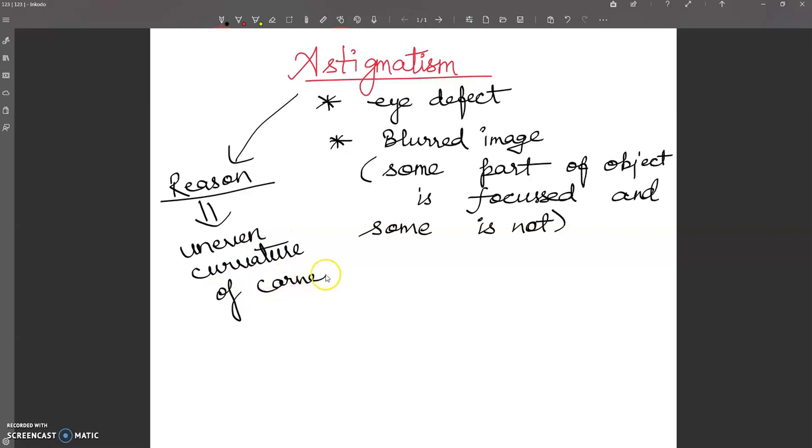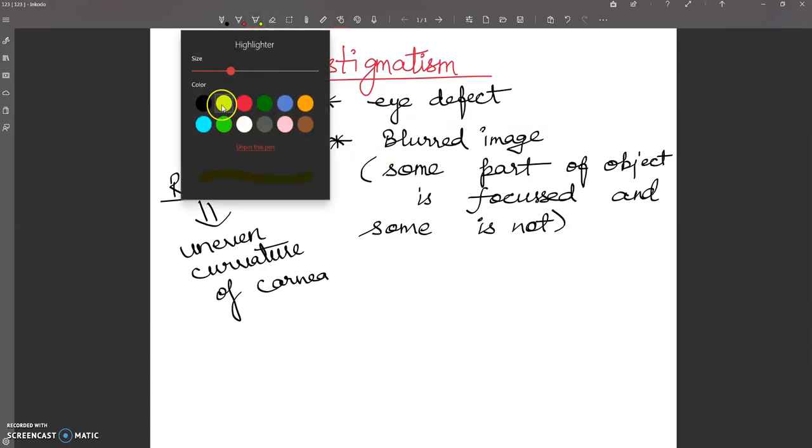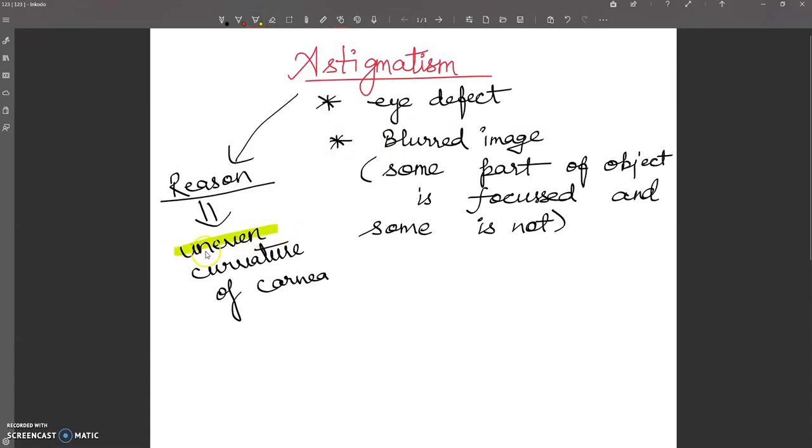I have already told you about the cornea and how much light will pass. It will allow the light to pass, focusing an inverted image of the object on the retina. The cornea is a transparent front part.